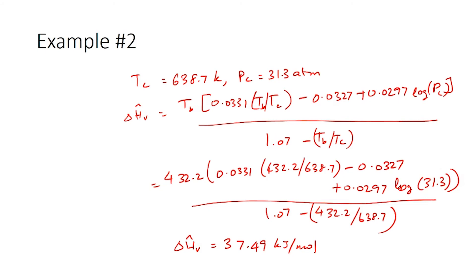For this particular case we find that Trouton's rule is more accurate than Chen's equation. Chen's equation gives less than 2% error here. However, we must recognize that although Trouton's rule fit perfectly in this scenario, it can give up to 30% error in other cases. Chen's equation will consistently give less than 2% error, so using Chen's equation can potentially provide higher accuracy in more frequent analyses.